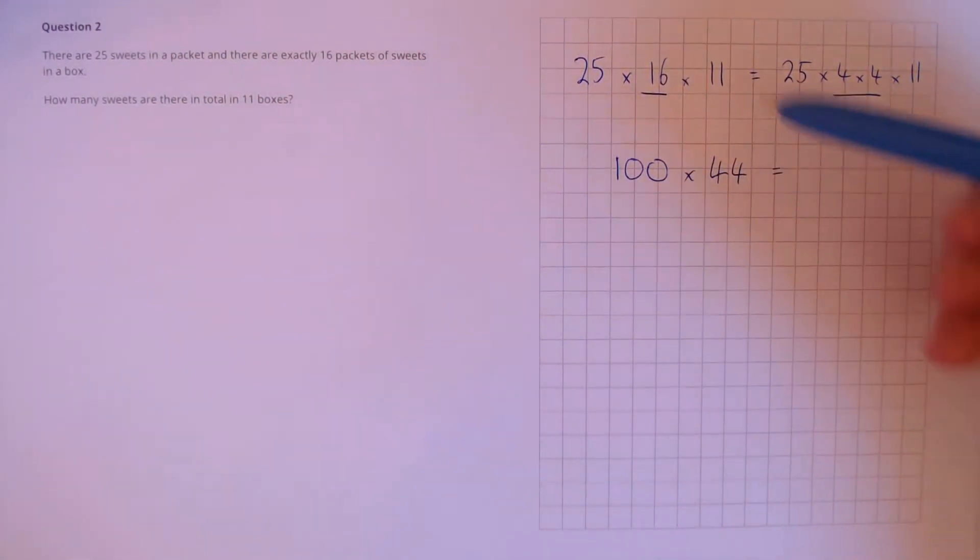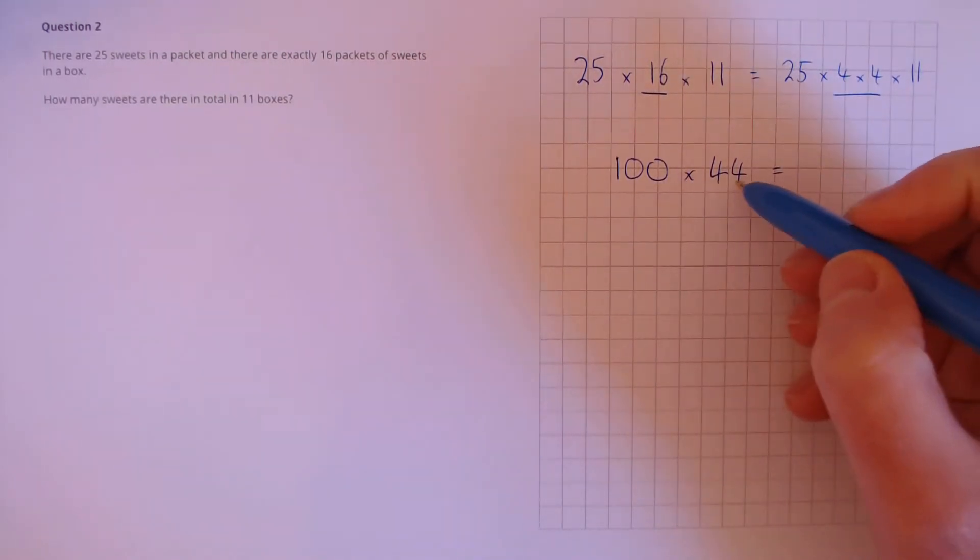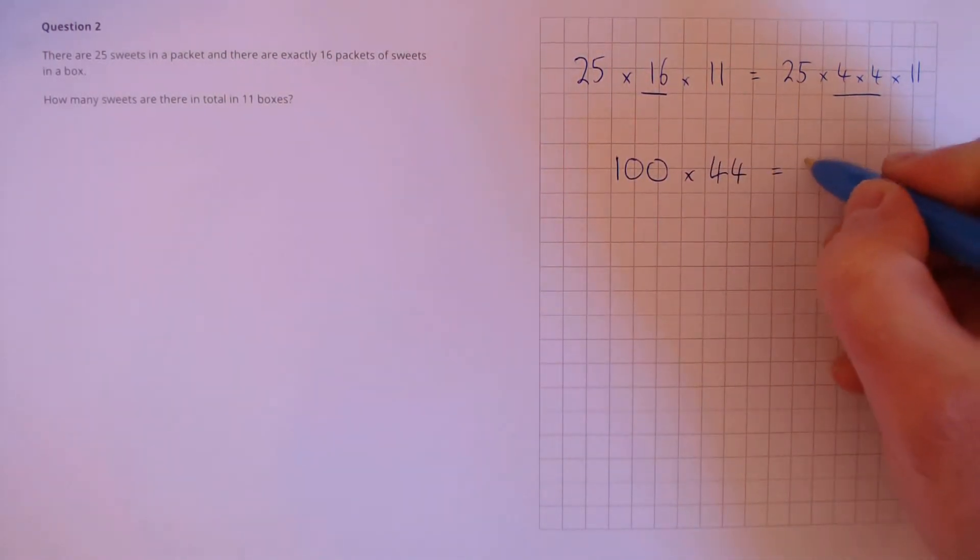This is a much easier sum than the above. To multiply 44 by 100, we get 4440.